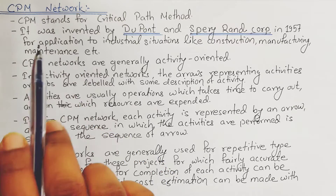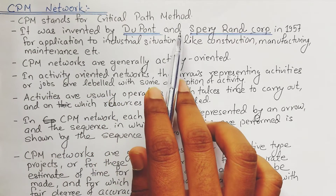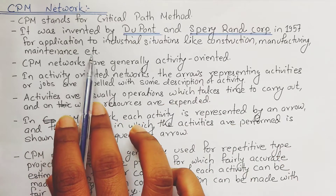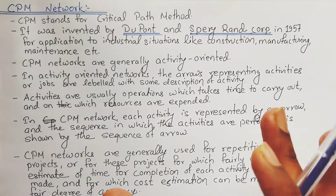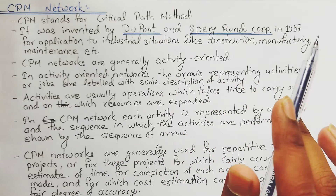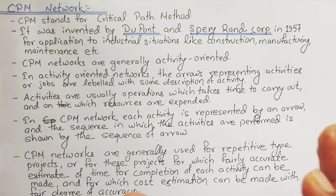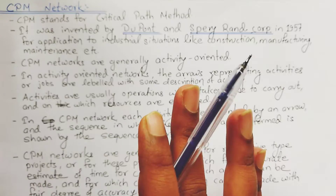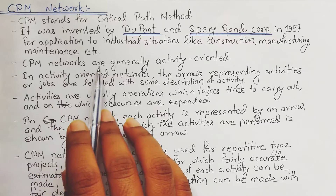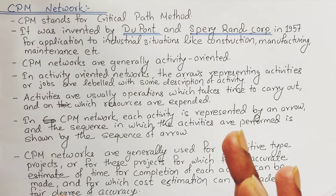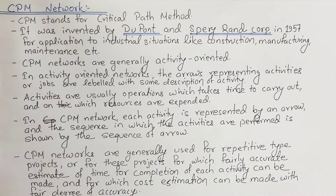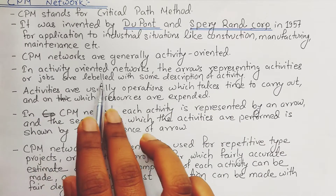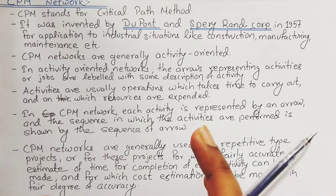CPM — Critical Path Method — was invented by DuPont and Sperry RAND Corporation in 1957 for application to industrial situations like construction, manufacturing, maintenance, etc. CPM networks are generally activity oriented, meaning the arrows representing activities or jobs are labeled with some description of the activity.